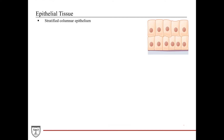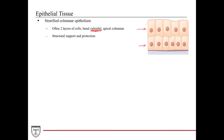Another stratified epithelium that is not quite as common is the stratified columnar epithelium. This tissue is also comprised of typically just two layers of cells. Despite how it may look in diagrams, the basal compartment cells tend to be more cuboidal in shape — short and rounded — and it's really the apical surface cells that are the true columnar cells. Such an epithelium is typically associated with larger ducts where it provides structural support and protection, and it is also found lining the conjunctiva — the mucous lining of the whites of our eyes as well as the inside of our eyelids.